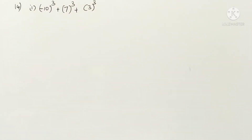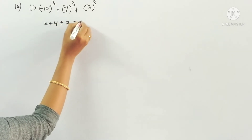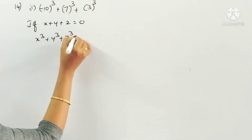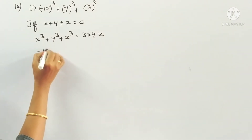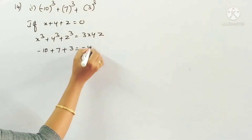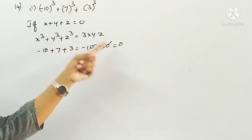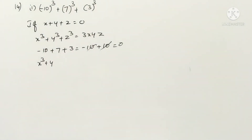Now the 14th problem: without actually calculating the cubes, find the value of each of the following. From problem 13 we proved that if x plus y plus z equals 0, then x cube plus y cube plus z cube equals 3xyz. We will use this formula here. For the first part, minus 10 plus 7 plus 3 equals 0, so the formula applies.